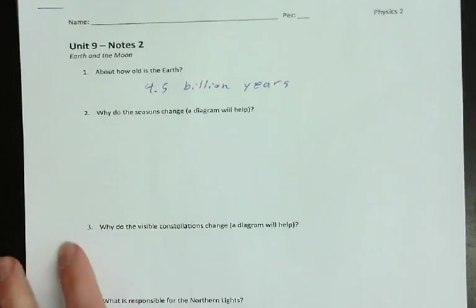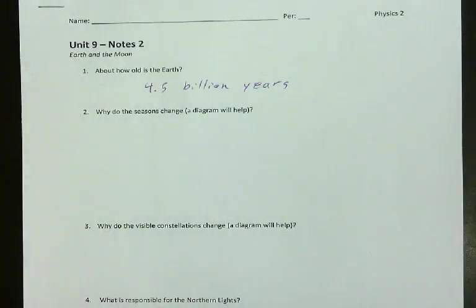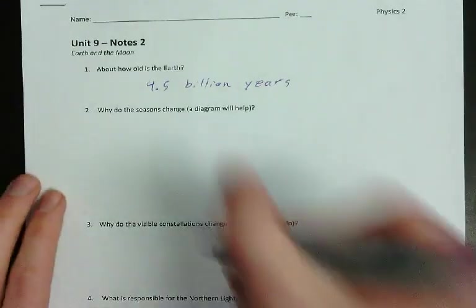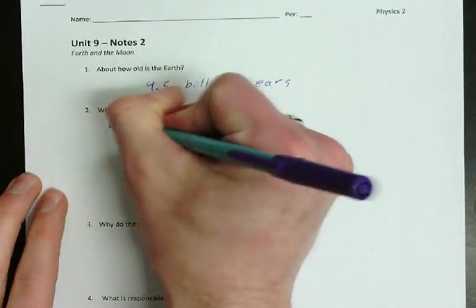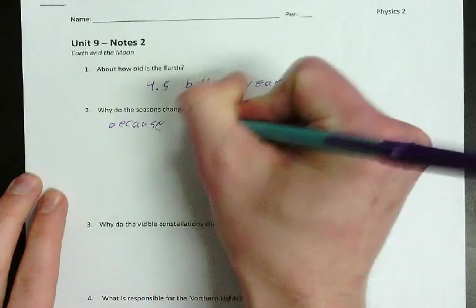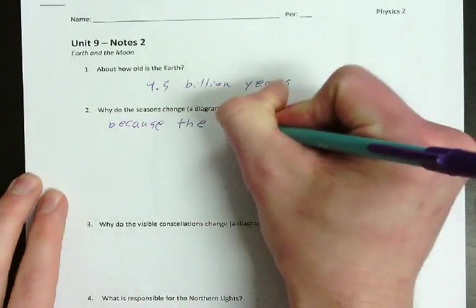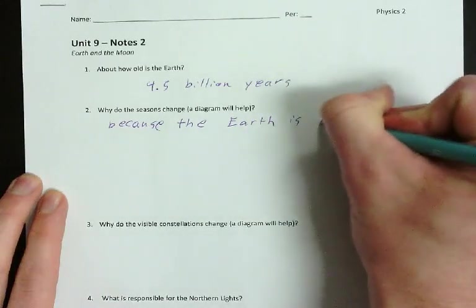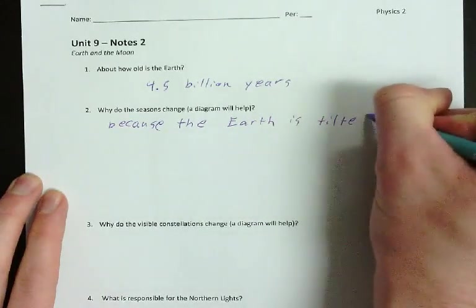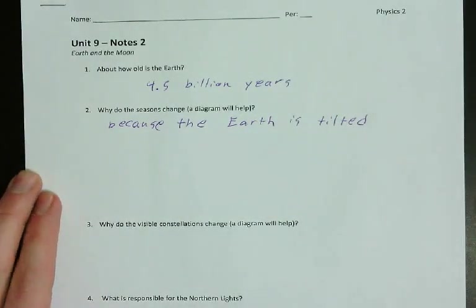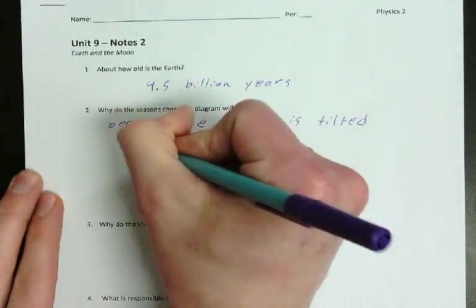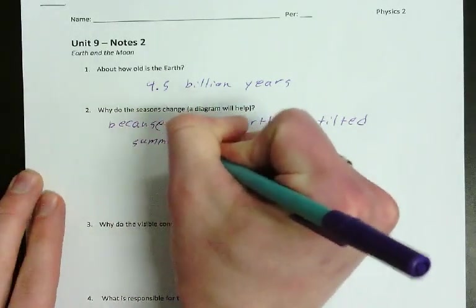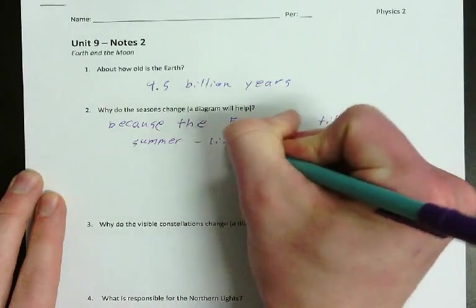So why do the seasons change? A diagram will help. Why do the seasons change? Because the earth is tilted. In the summer, light is more direct.